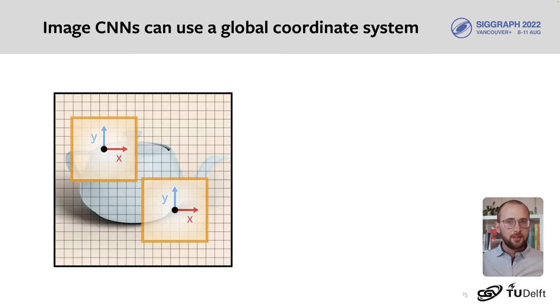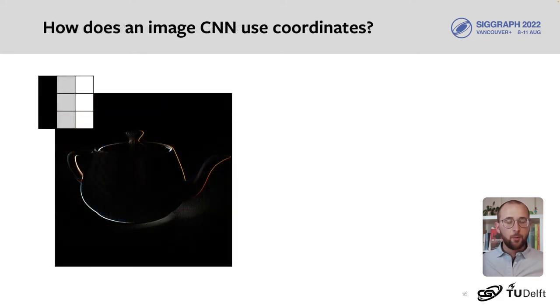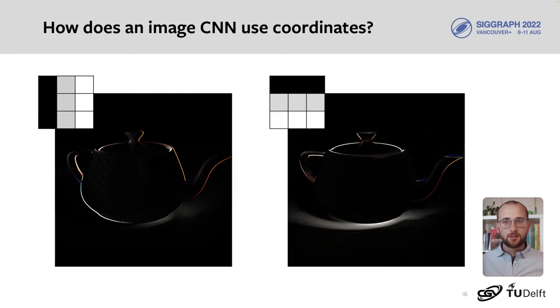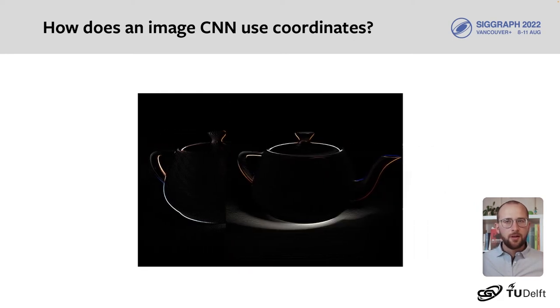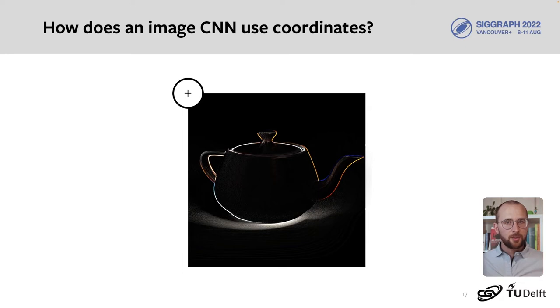On images, it's straightforward to apply anisotropic or directional convolutions, because we have a global coordinate system, the pixel grid. We could find vertical edges with a vertical edge kernel, and do the same with a horizontal edge kernel. These can be combined in neural networks to construct more complex features such as corners and shapes.